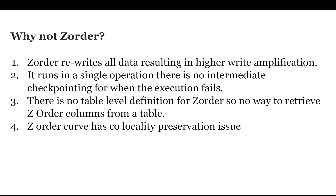Imagine you are doing a Z-order on a particular Delta table. Every time you run that command — say daily — it is going to rewrite all the data in that Delta table every single time. If you run Z-order 10 times during the day, it rewrites all the data 10 times. That is why we say Z-order has higher write amplification, making it a very expensive operation that consumes a lot of executor memory and time.